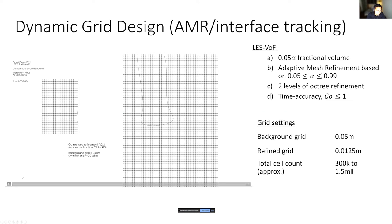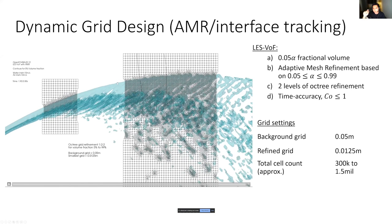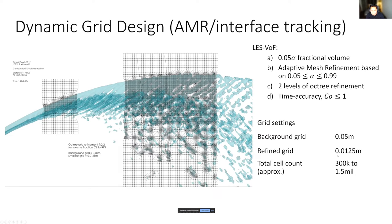The AMR in action shows the same water interface relative to the background grid being refined as the water jet goes through the air. AMR refines at 5% fractional volume threshold up to two levels of refinement based on the block mesh or snappyHexMesh background mesh, with a time accuracy Courant number less than one. The background grid is 0.05 meters; after two levels of refinement, it reduces to 0.0125 meters. The cell count begins at approximately 300,000 and increases to about 1.5 million due to AMR refinement.